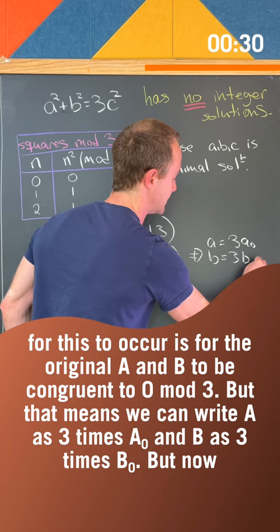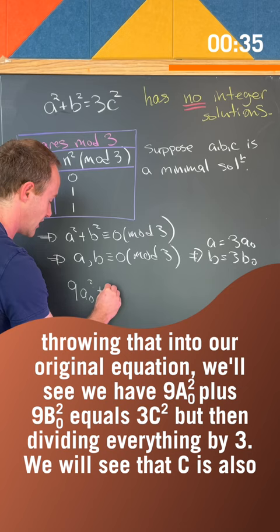But now throwing that into our original equation, we'll see we have 9 a naught squared plus 9 b naught squared equals 3c squared.